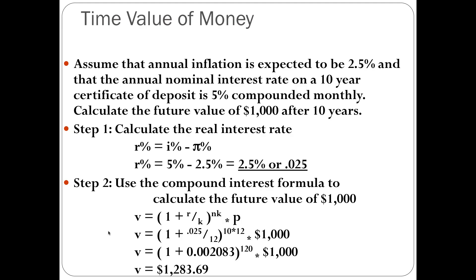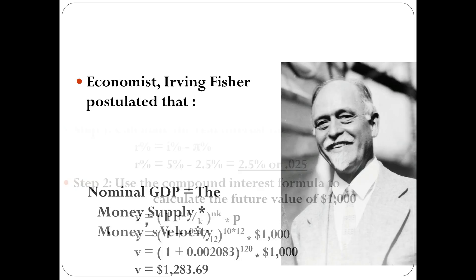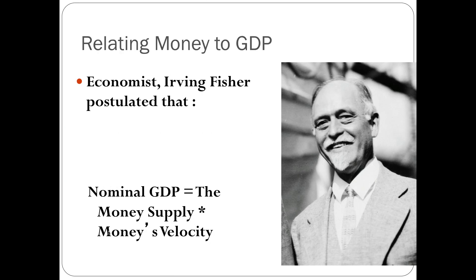Now let's relate money to gross domestic product. A very famous American economist named Irving Fisher postulated that nominal gross domestic product equals the money supply times money's velocity. Money's velocity refers to how often money changes hands — the rate at which money is exchanged from one transaction to another. You can also think of it as the number of times money is used to purchase goods counted in gross domestic product.